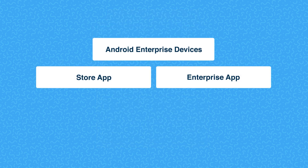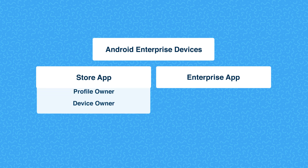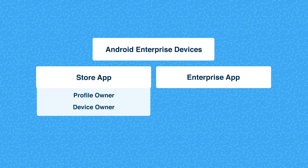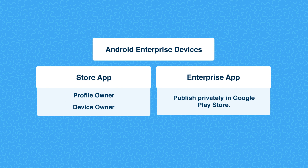For Android Enterprise enabled devices, store apps can be installed silently for devices enrolled both as profile owner and device owner. As for enterprise apps, they need to be published privately in the Google Play Store.